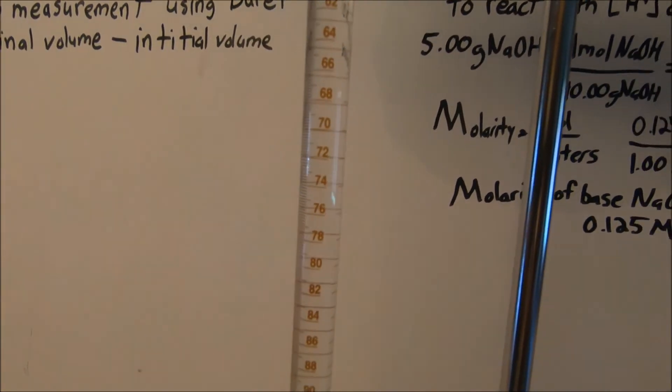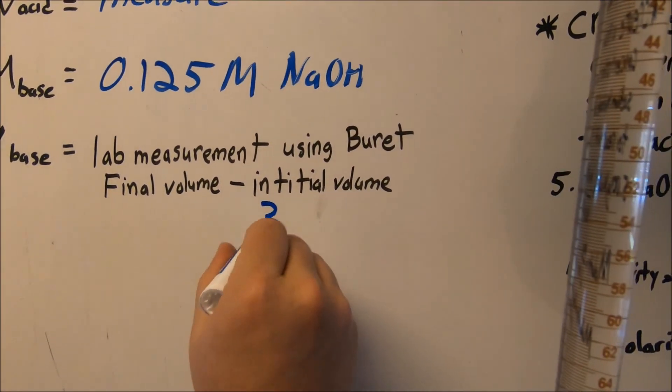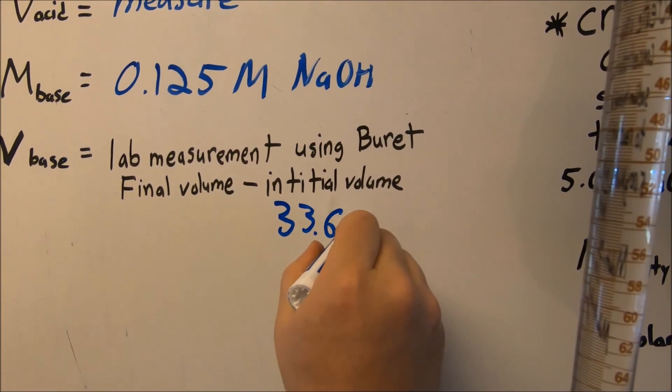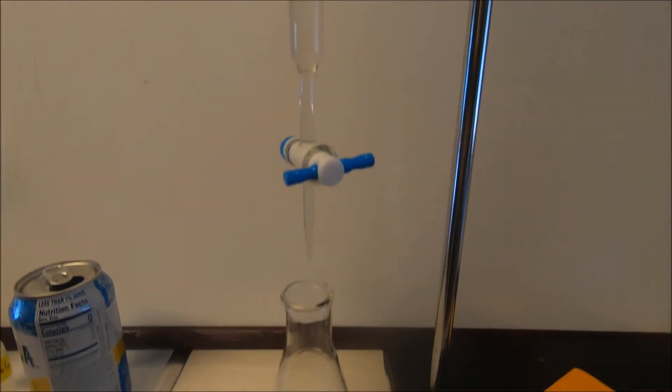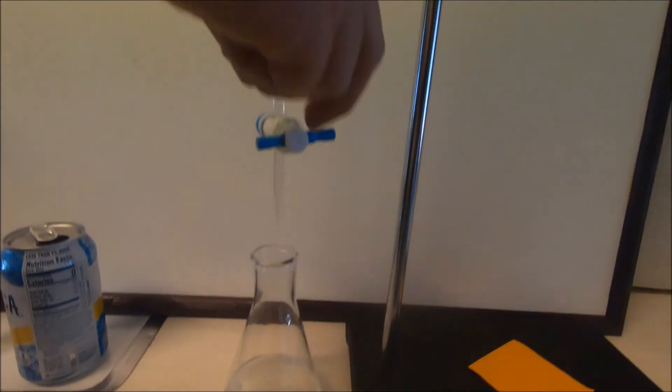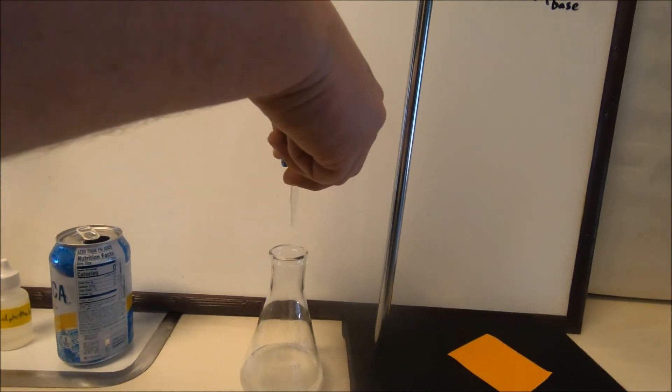So our initial volume at 33.6 milliliters. And now what we're going to do is we're going to add some sodium hydroxide to our unknown solution.